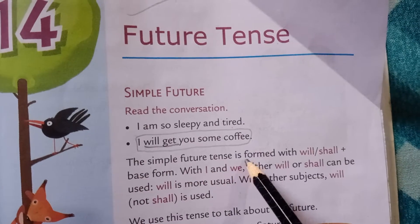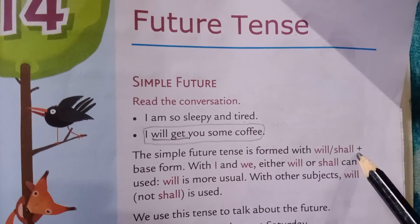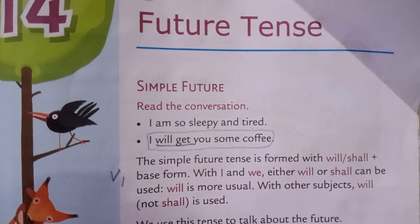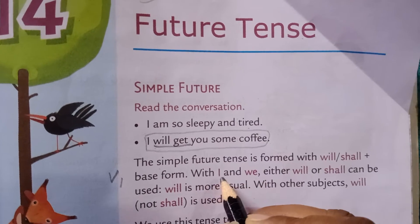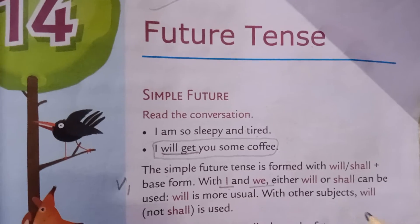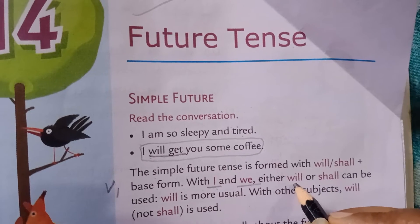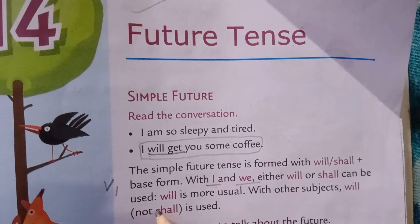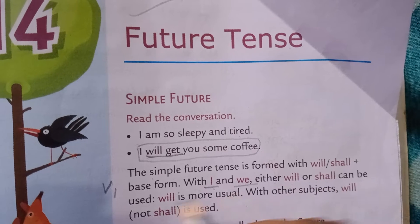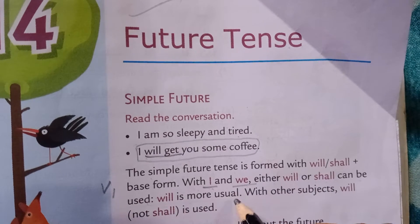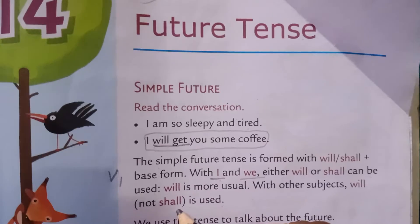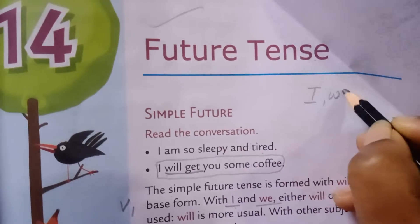The simple Future Tense is formed with 'will' and 'shall' plus the base form. Base form means verb first form. With 'I' and 'we' as subjects, we will be using either 'will' or 'shall.' Will is more usual.